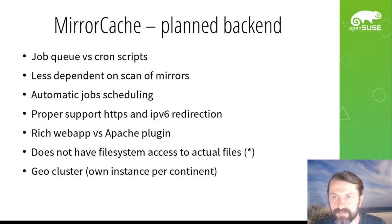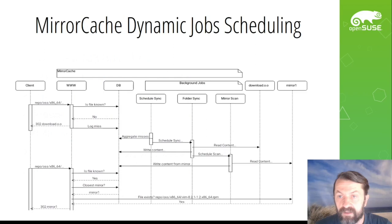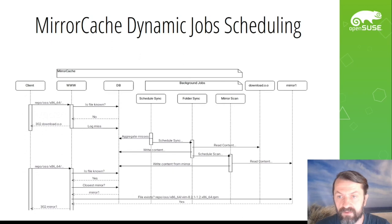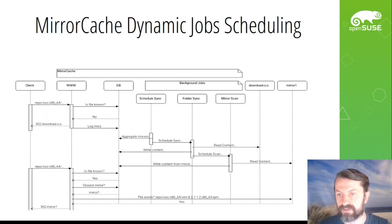This diagram shows more about the automatic scheduling of jobs. The main point is that background jobs monitor what is going on on the frontend. If there are requests to unknown files, it will schedule special jobs that discover those files, register them properly, and scan all the mirrors that are needed.